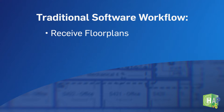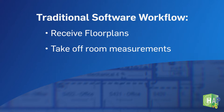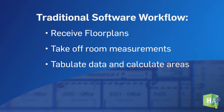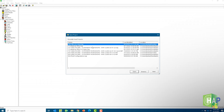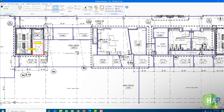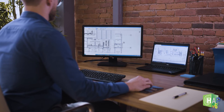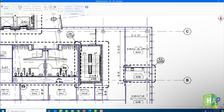Traditional approaches to peak load calculation and energy modeling required many steps and significant labor to create the building model. But in HAP6, simply import the architectural floor plans, quickly sketch over boundaries to identify spaces, and drag and drop window and door openings into place.